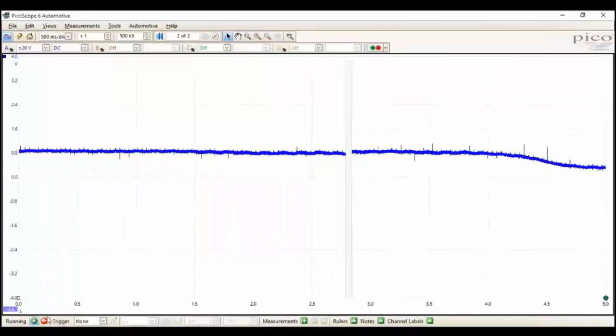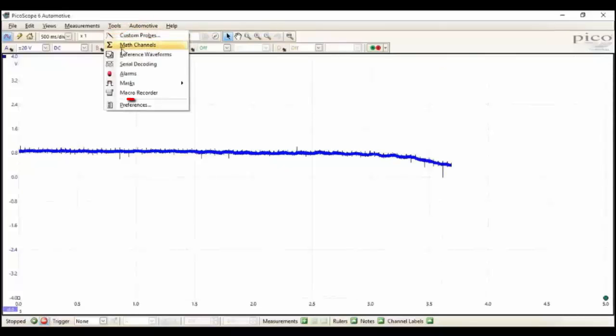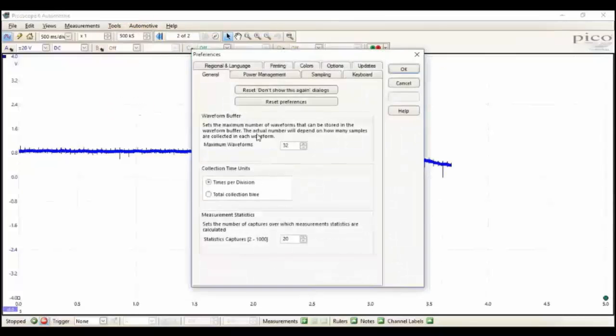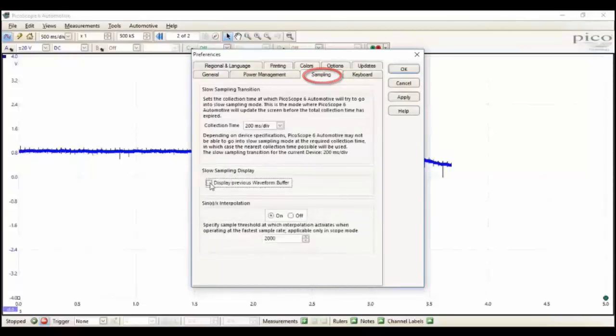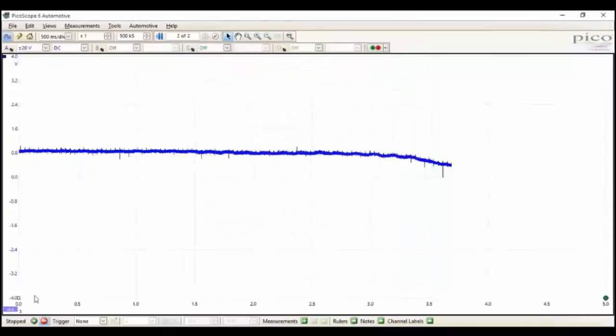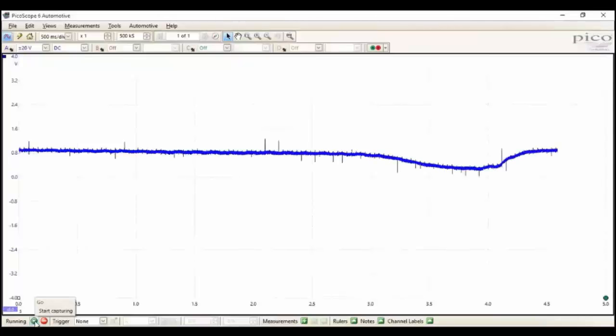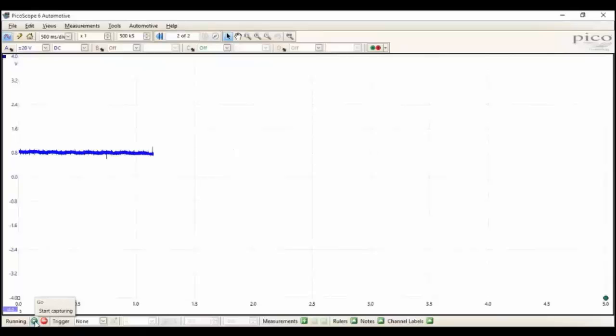We still have display previous waveform buffer activated. So we go to tools, preferences, sampling, and remove the feature display previous waveform buffer. There we have it, plus or minus 20 volt range, unfiltered with a times 5 vertical zoom.